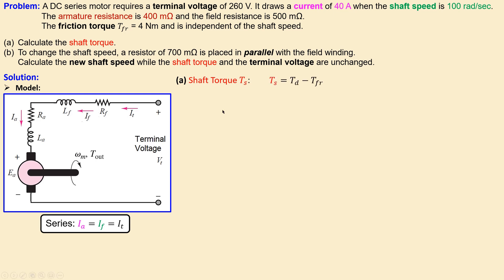Shaft torque equals developed torque minus friction torque, so the actual shaft torque is a little less due to friction. The developed torque is given by the motor constant times the armature current. We know the armature current is 40 amps, the same as the terminal current, but we still need the motor constant.